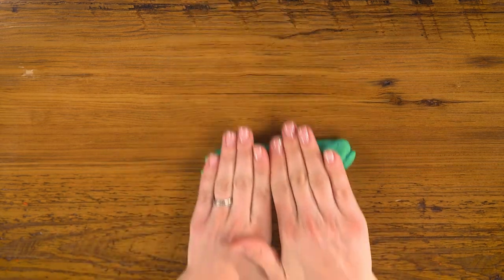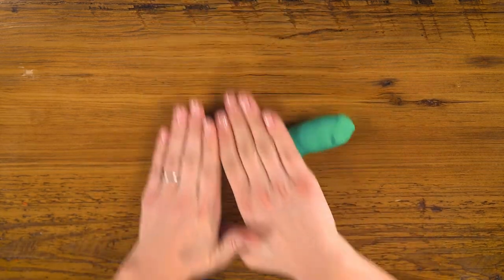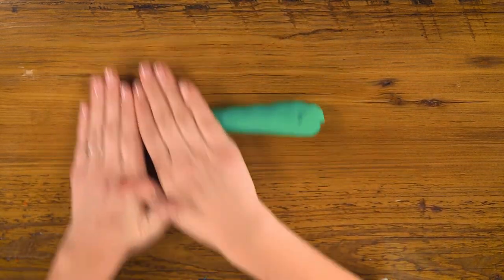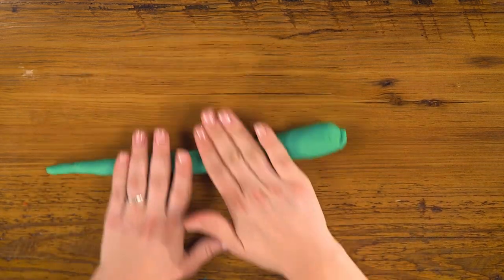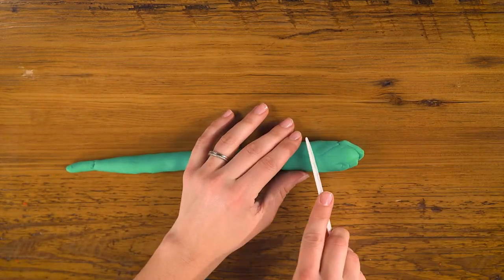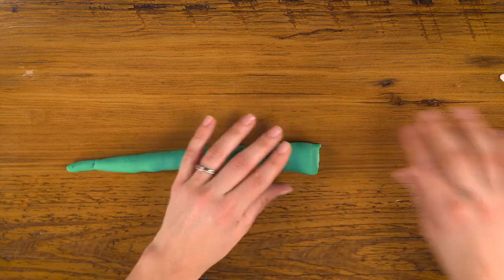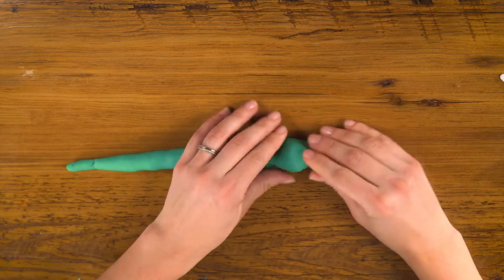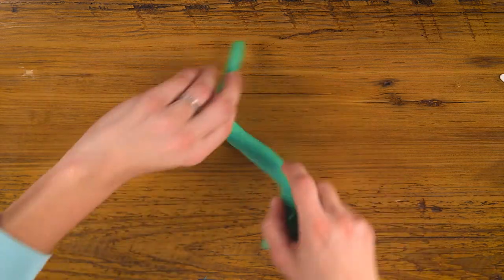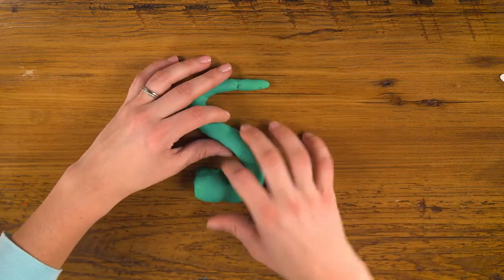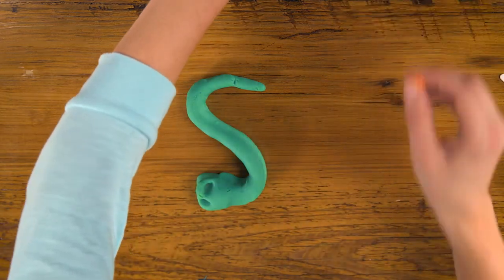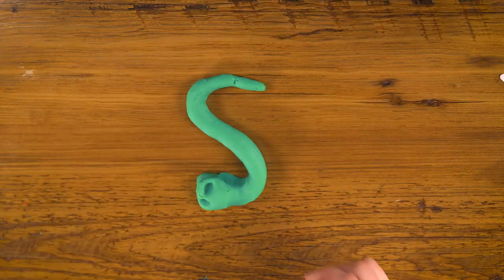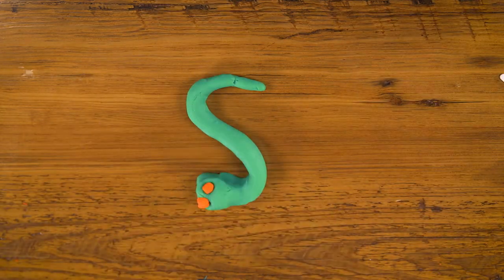For S, I'm going to use green again and do something a little bit special. I'm going to roll out a rope, but make it thin at one end and a little bit thicker at the other. And this will help you remember your S, because it looks like a snake.